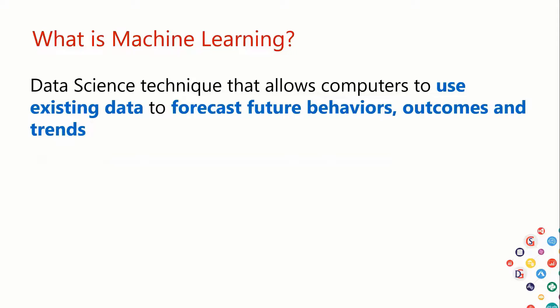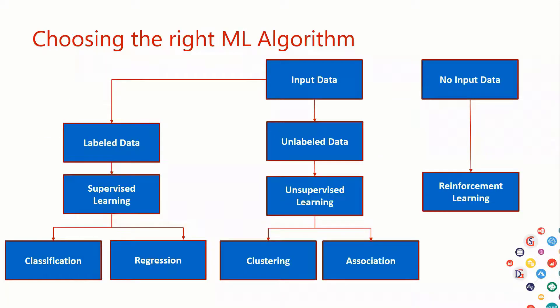Coming back to where machine learning fits in artificial intelligence: deep learning is a subset of machine learning, and machine learning is a subset of artificial intelligence. Artificial intelligence is the umbrella term that comprises all these other technologies within it.